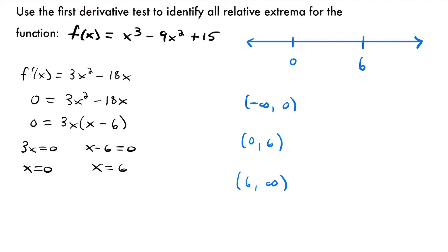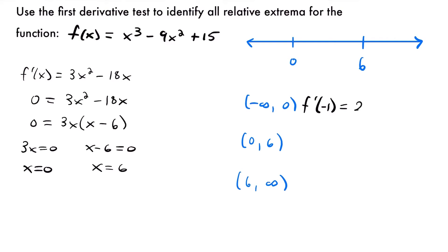Let's start with negative infinity to 0 and pick negative 1 as our test value. Plugging into the derivative: 3 times negative 1 squared minus 18 times negative 1. That's 3 times 1, which is 3, and then subtracting negative 18 becomes positive 18. So we have 3 plus 18, which is positive 21. That's a positive slope, so our function is increasing on this interval. We label that as positive on our number line.